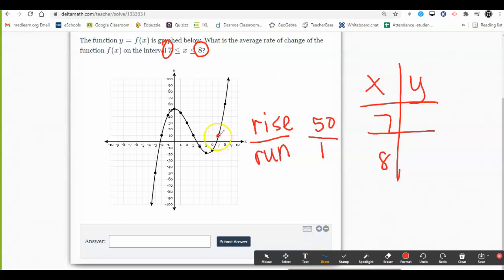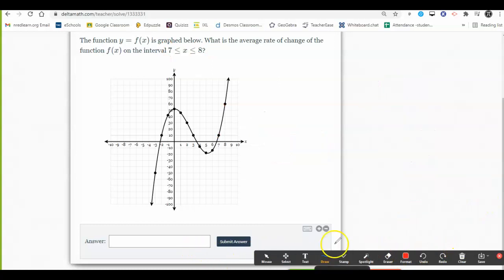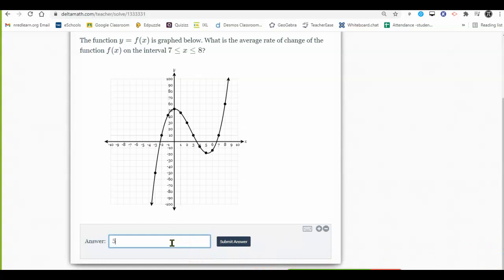7 has a y value of 10, and 8 has a y value of 60. So when I do 60 minus 10 over 8 minus 7, I get 50 over 1. The average rate of change for this function over the interval of 7 to 8 is 50 over 1, also known as 50.